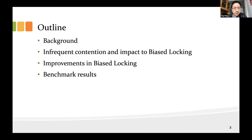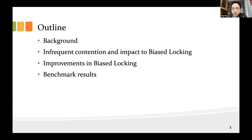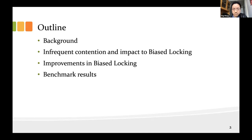Here is the outline. First, I will introduce the background, particularly the bias locking feature in OpenJDK. Then I will bring forward the infrequent contention scenario and highlight its impact on bias locking. Next, I will introduce our improvement in bias locking to make it work better for this infrequent contention scenario. Finally, I will conclude with evaluations on benchmark results.